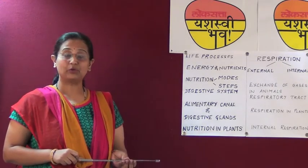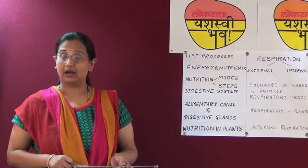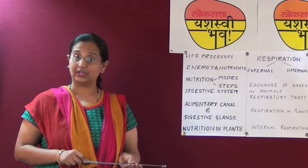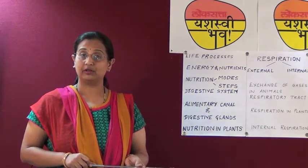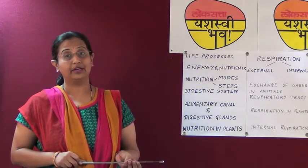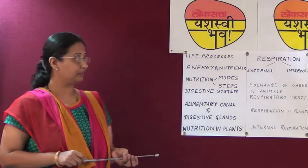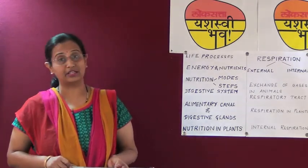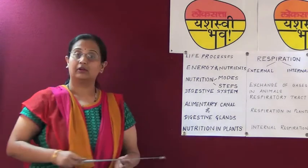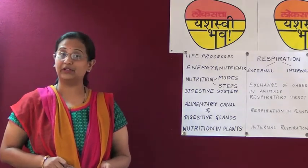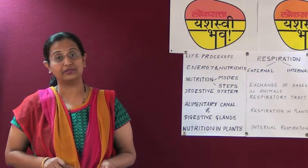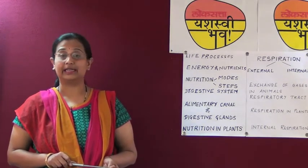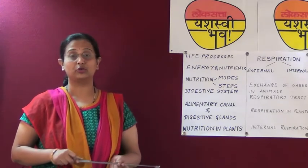The steps of nutrition seen in living organisms are as follows: ingestion, digestion, absorption, assimilation, and ejection. Nutrition takes place in the digestive system. The human digestive system consists of the alimentary canal and the digestive glands. The alimentary canal is a long muscular tube that extends from the mouth to the anus.